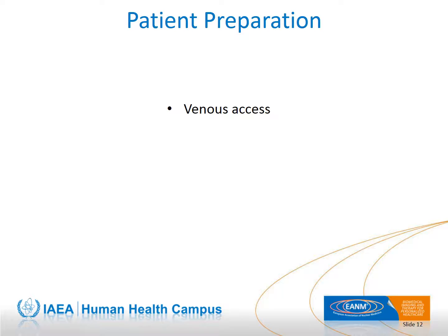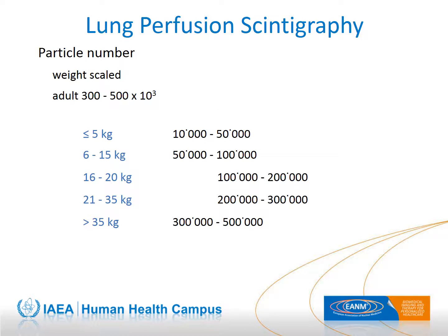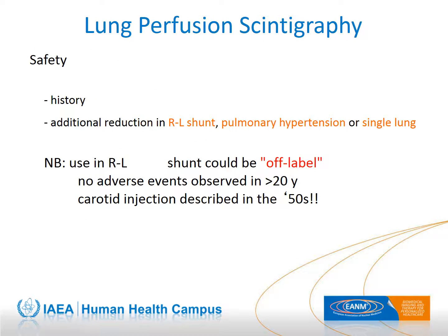The site of injection should be carefully selected, taking into account the anatomofunctional situation. Scaling the number of particles takes into account the reduced number of arterioles and capillaries in the developing lung. The labeling of macro-aggregates of albumin can withstand modifications in volumes and specific activity without significant consequences. When a right-to-left shunt is known or suspected, a further reduction in the number of particles increases the safety of the procedure. The same holds true for patients with pulmonary hypertension or a single lung. Administration of macro-aggregates of albumin in patients with a right-to-left shunt may be considered off-label use in certain countries.